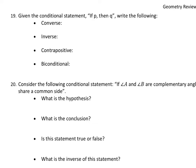The converse switches the hypothesis and the conclusion: if q, then p. The conclusion is now the hypothesis and the hypothesis is now the conclusion. In shorthand, that's q-arrow-p — on the left is how we wrote it in notes, on the right is the shorthand.